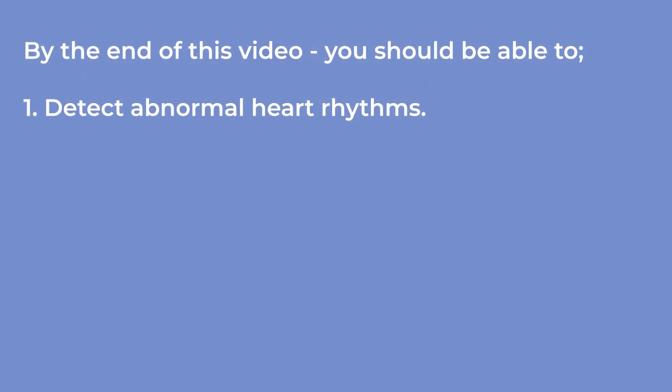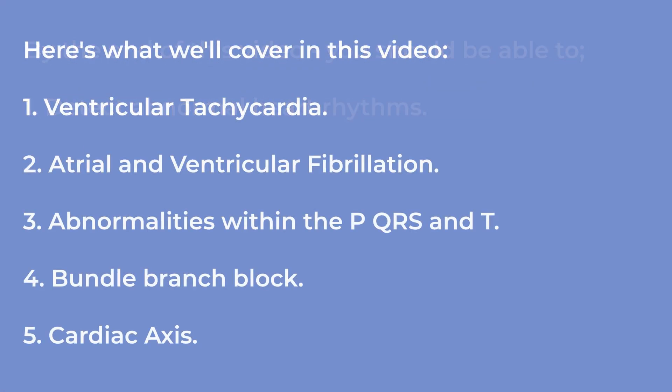Hi, welcome back to my third video on ECG interpretation. In the second video we talked about problems of the AV node and the differences between supraventricular and ventricular arrhythmias. We're going to continue on that theme and talk about abnormal rhythms — starting with ventricular tachycardia, then atrial and ventricular fibrillation, then problems within the complex itself — the P, QRS, or T segment — and finally bundle branch block.